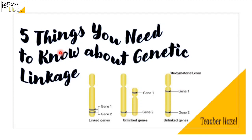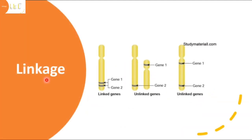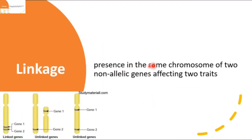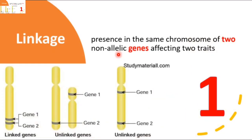Hello everyone, this is your teacher Hazel and our topic for this video is 5 things you need to know about genetic linkage. So let's start first with a simple definition of linkage. When we say linkage, this is the presence in the same chromosome of two non-allelic genes affecting two traits. Now let's dissect the definition, because from this definition, there are five things you need to keep in mind.